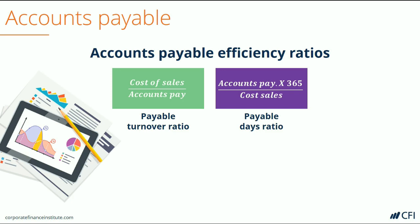It's worth noting that there can be areas of the income statement outside of cost of goods sold where the company has payment terms, meaning they don't pay everything right away. Employees are paid essentially right away, but other items below cost of goods sold may also have payment terms. You could include those line items in your analysis, although it is often a lot harder to get good detailed information on those other line items, so typically it's only applied to cost of goods sold.